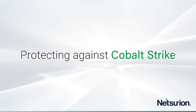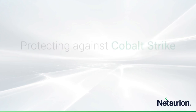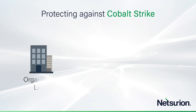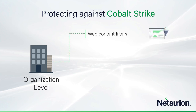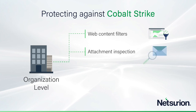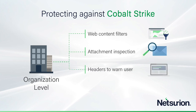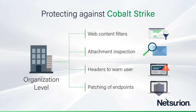So how can you protect your organization against Cobalt Strike? At an organizational level, in case it's arriving through phishing, think about web content filtering, attachment inspection, and applying headers to warn users: 'You are downloading something from an outside source — are you sure?' Patching of endpoints is also essential. In the example shown, they were exploiting old Office vulnerabilities. You've got to patch not just your operating system components but all your software components as well. Easy to say, but hard to do at every endpoint all the time 24/7.